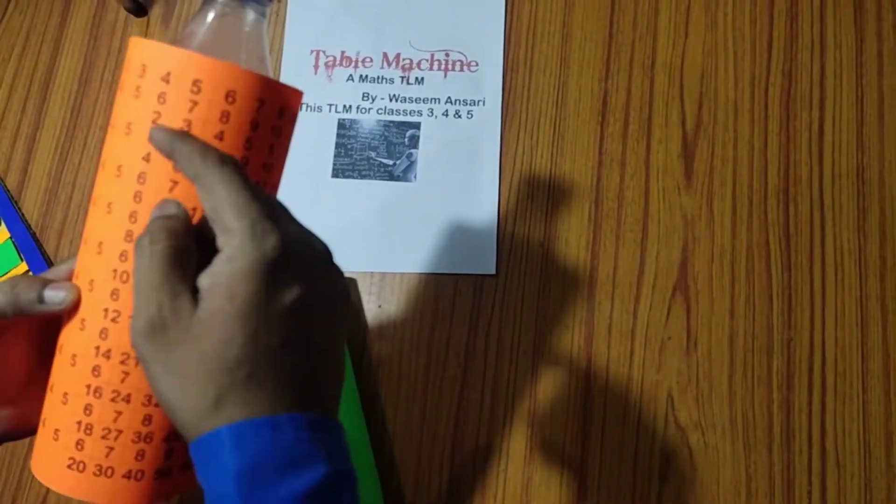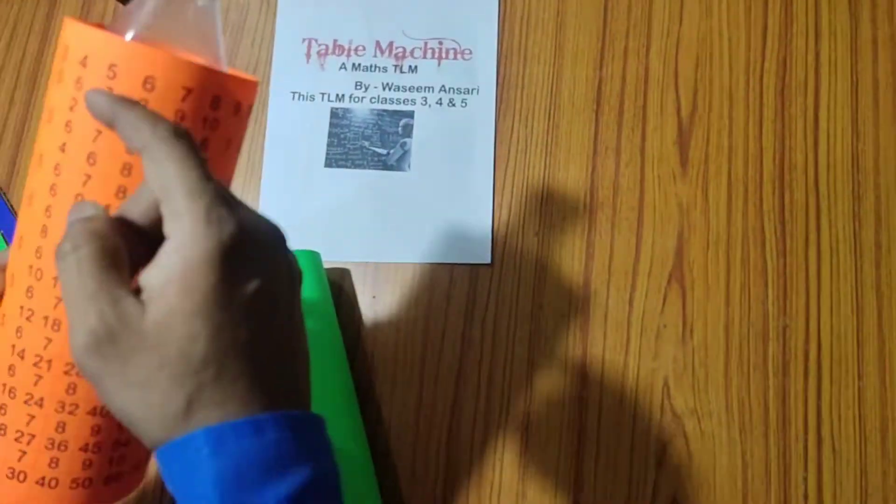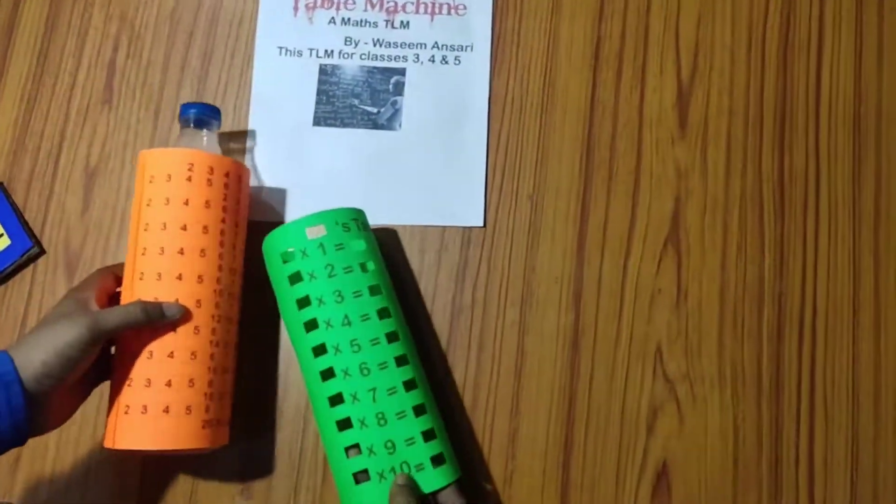Number 2 times 1 is 2, 2 times 2 is 4, 2 times 3 is 6, 2 times 4 is 8. Similarly 2 table is there, then 3 table is there, then 4 table is there, then 5 table is there. All the tables we have written here.